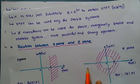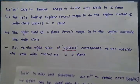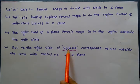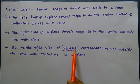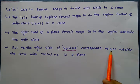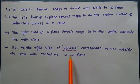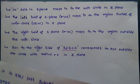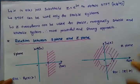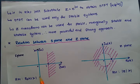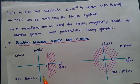As an example, an ROC to the right side of Re(S) = A in the S-plane corresponds to the ROC outside the circle with radius A in the Z-plane. That is, if Re(S) is greater than 1, then |Z| greater than 1 is the corresponding region of convergence.